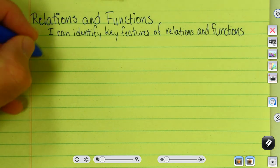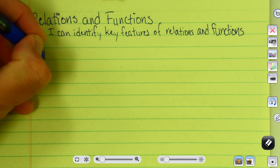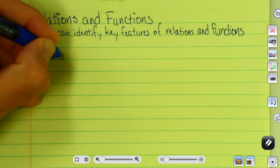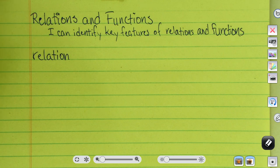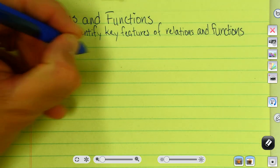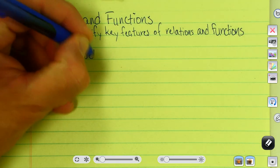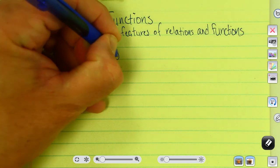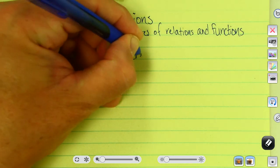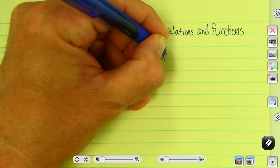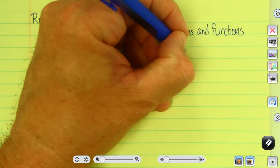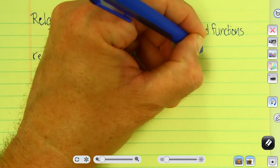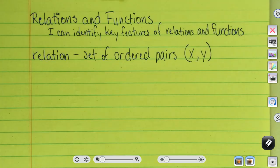First of all, what is a relation? Well, a relation is, in math, a set of ordered pairs. A set of ordered pairs we often refer to as X and Y.